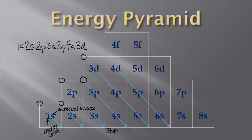We just keep going, hitting all of the angles. When we get to 5F, we jump over and continue down. We could keep adding to the pyramid if we had anything beyond F — then we would add maybe a G sublevel.